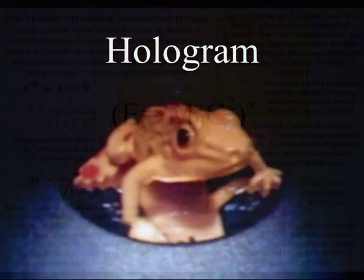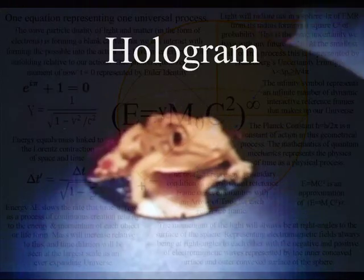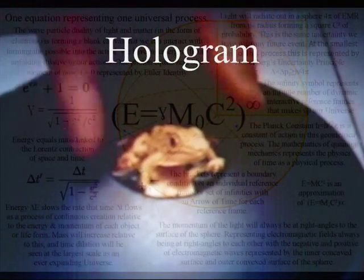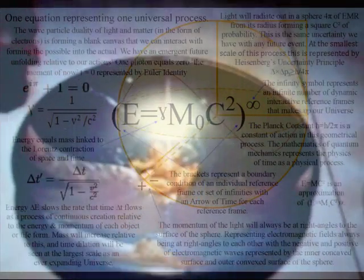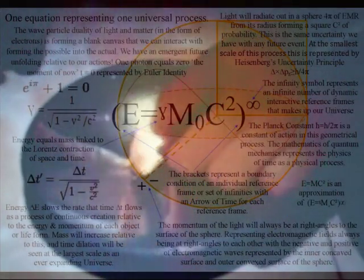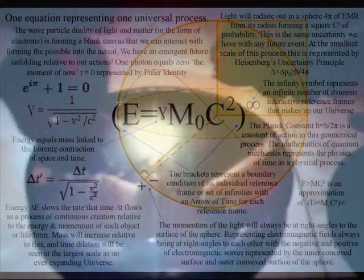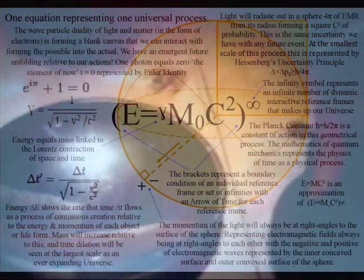In the holographic principle, the information of a three-dimensional image is encoded on a two-dimensional surface. In this theory, this is achieved by a continuous process of spherical symmetry forming and breaking.